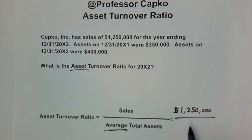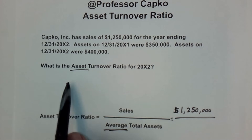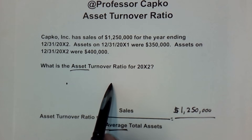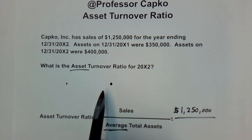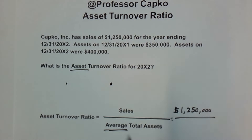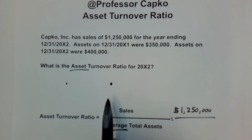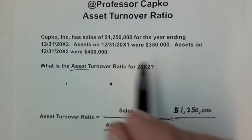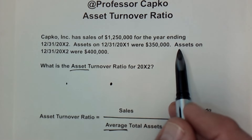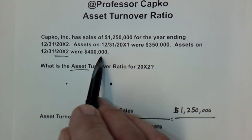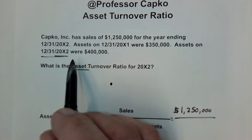Next we have to figure out the average total assets. The way we do that is we look at the assets at the beginning of the year and add that to the assets at the end of the year, then divide by two. So we've got beginning-of-year assets and end-of-year assets — the assets may go up or down, it doesn't matter.